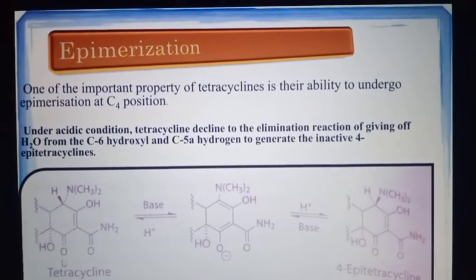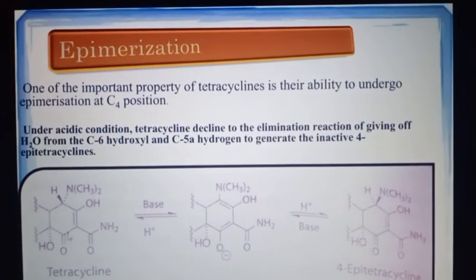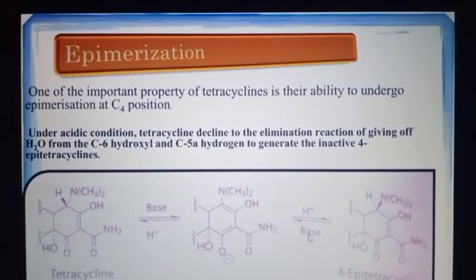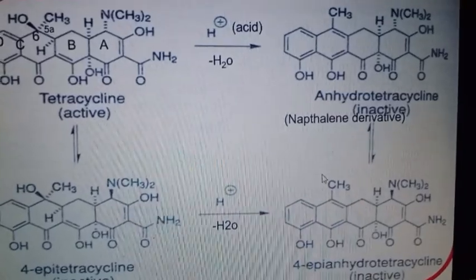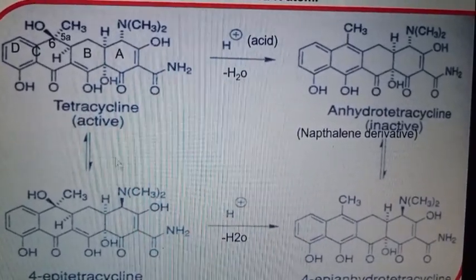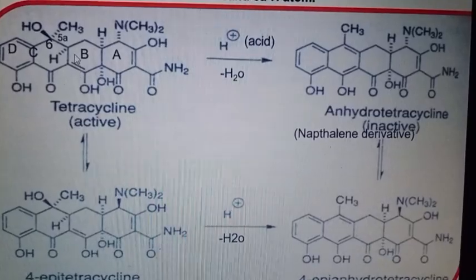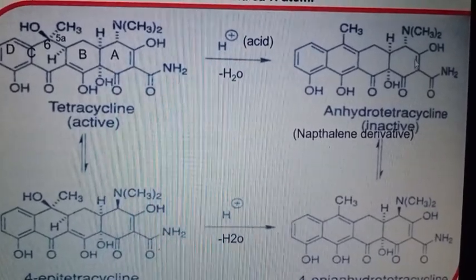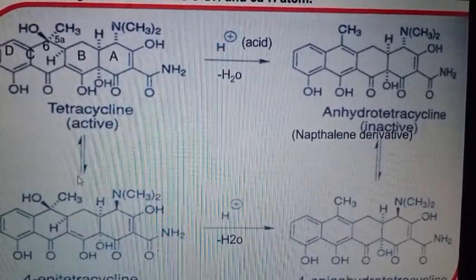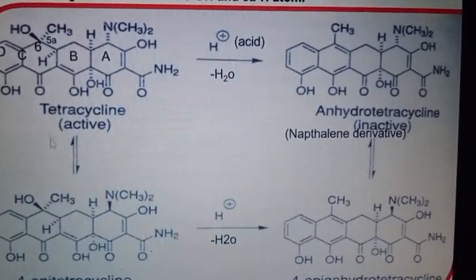Now looking at the structure — this is the original tetracycline structure. Circle the two structures shown: one is the original, and these two structures together illustrate the epimerization. Let's look at these two structures carefully.